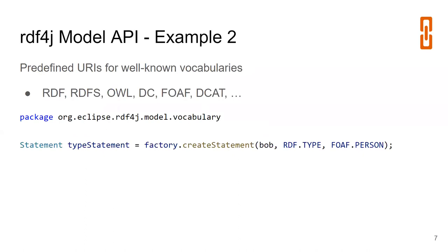Since this library is actually being used, there are some syntactic shortcuts and convenience classes. For the most common vocabularies used in the world of linked data there are predefined classes with predicates and class IRIs from those vocabularies as constants — for RDF, RDFS, OWL, Dublin Core, FOAF and so on. You do not have to remember the IRI of a certain class or predicate; you can just use the constant that is there for you. For example, Bob is a Person using those constants.